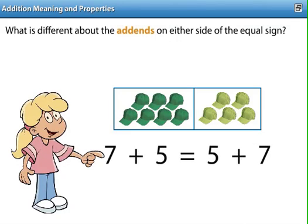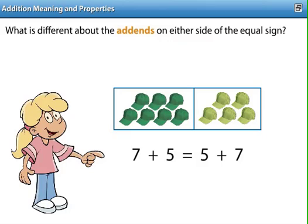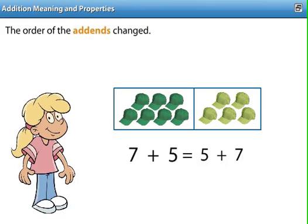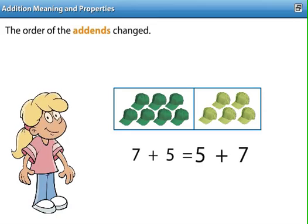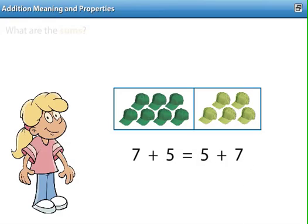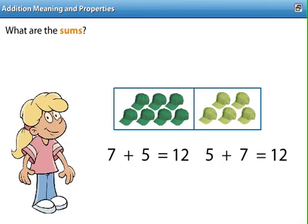What is different about the addends on either side of the equal sign? The order of the addends changed. Notice it was seven plus five and now it's five plus seven. Do you think that makes a difference? What are the sums?